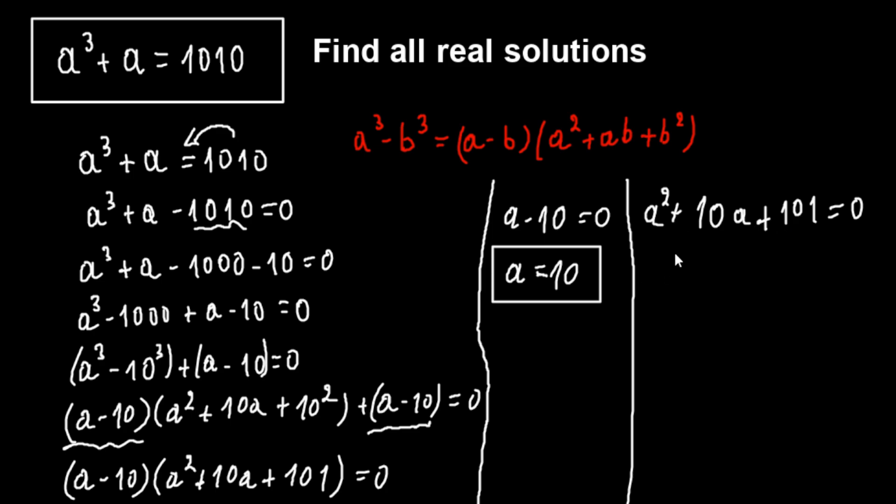For this quadratic equation, we find the discriminant, which equals 10 to the second minus 4 times 1 times 101, which equals 100 minus 404.